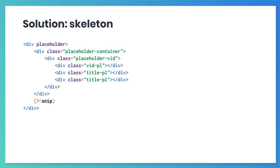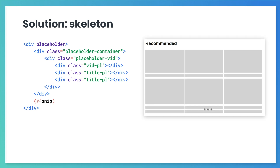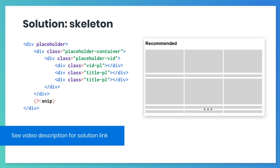In your solution, of course, you should have the additional five containers. On the screen, you'll see also how the skeleton loading might look on your site. The solution is also available at the link in your video description.